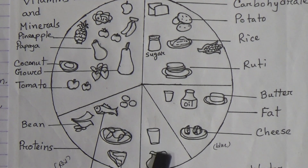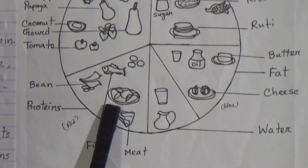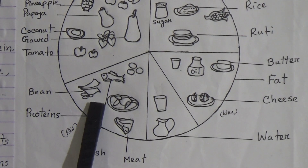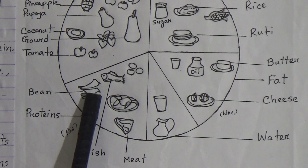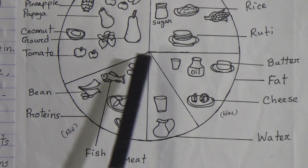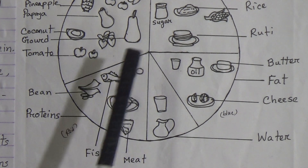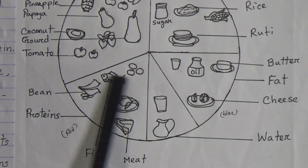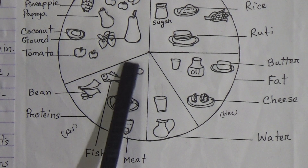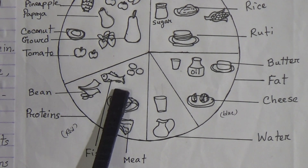This portion is proteins. Here we have beans, meat, fish, and egg. The background color for this portion will be red.